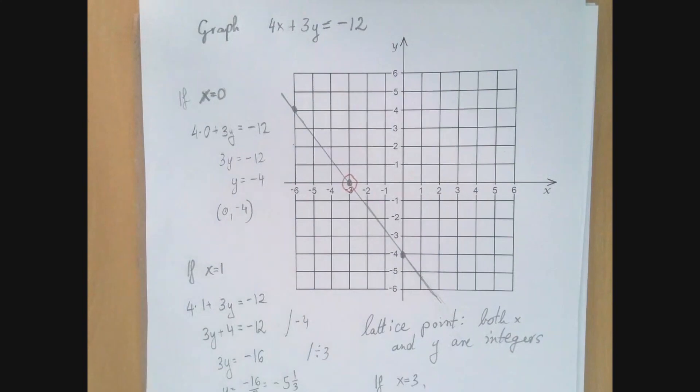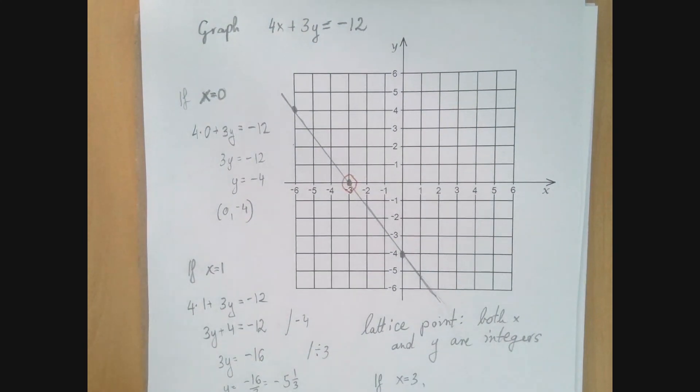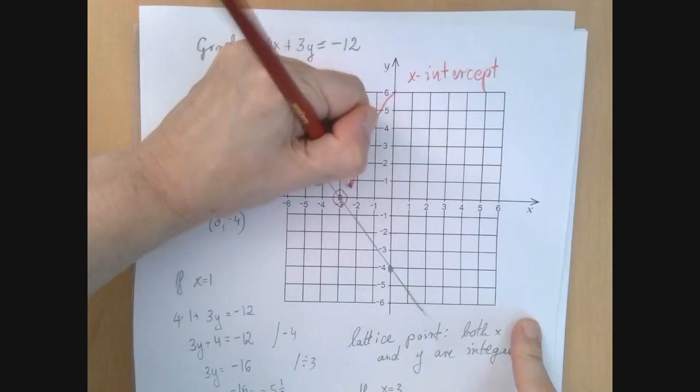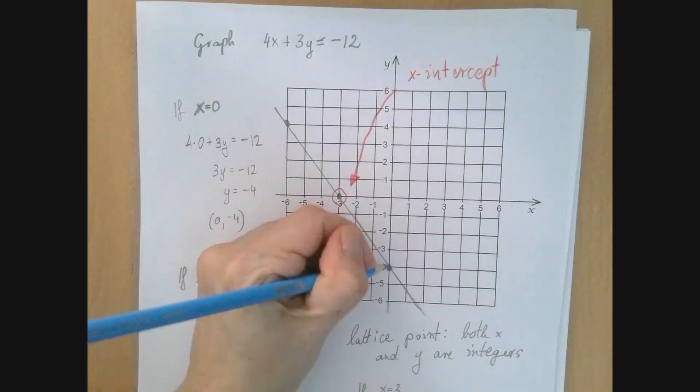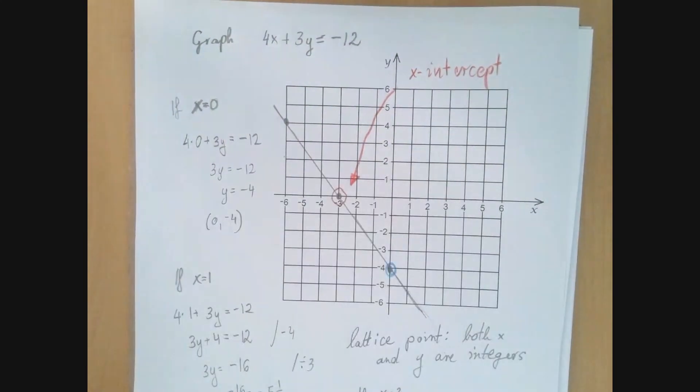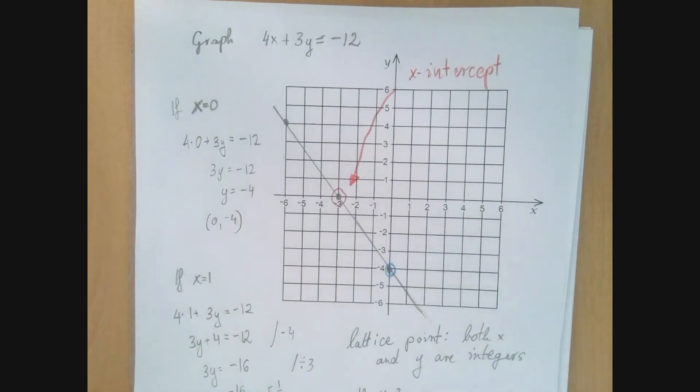These two are special points. And we will see this later. This point is where this particular line intersects the x-axis. That is called an x-intercept. So this point is what we call the x-intercept of the line. And this other point is where the graph intersects the y-axis. And that is called a y-intercept of the line.